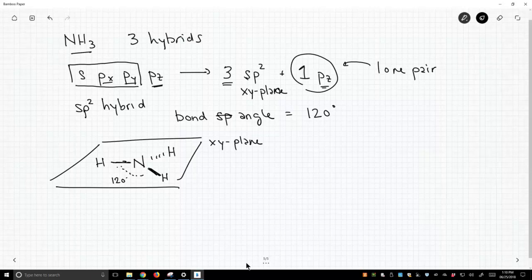And what's the orientation of our lone pair? Well, it sits in the pz orbital. The pz orbital is going to stick perpendicular through the xy plane.